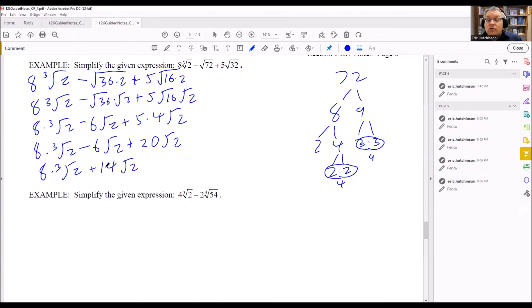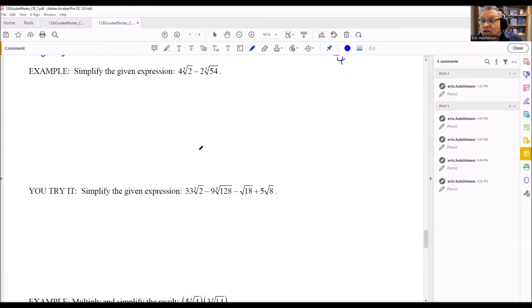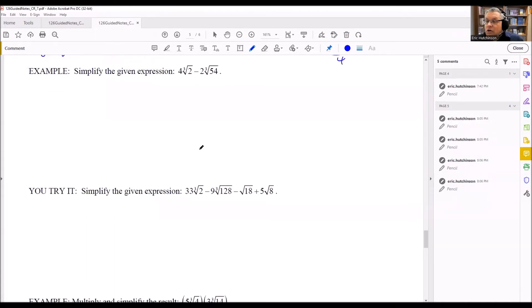These last two can't do anything with that because the indices are different. So that's my final answer: 8 cube root of 2 plus 14 square root of 2. Now let's take a look at these next two examples here.